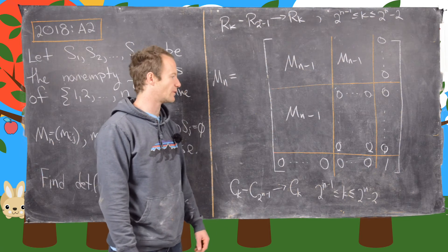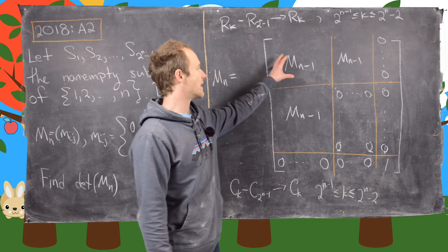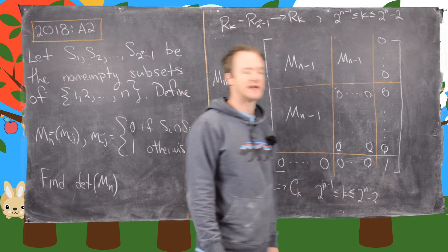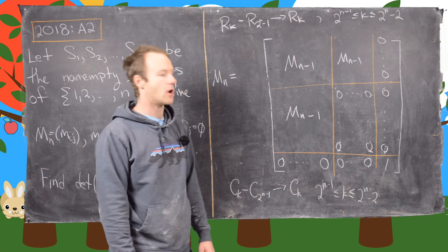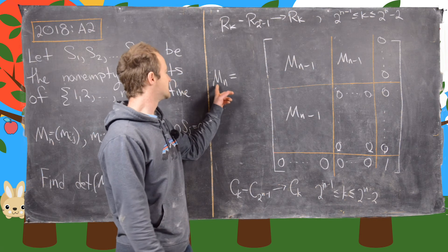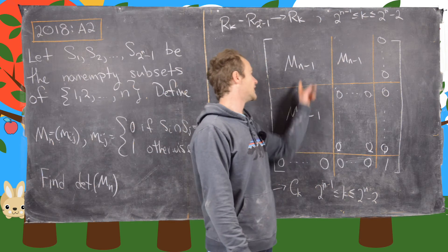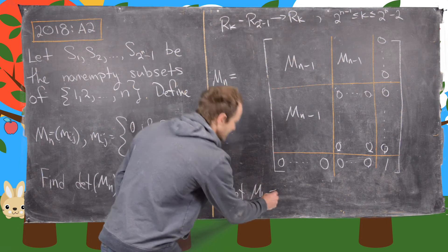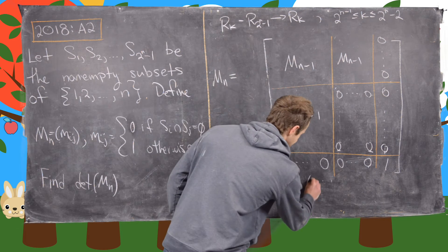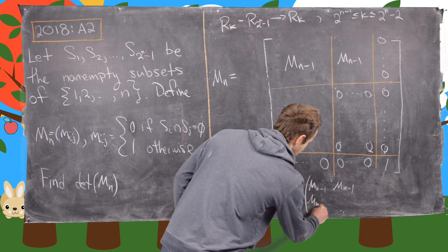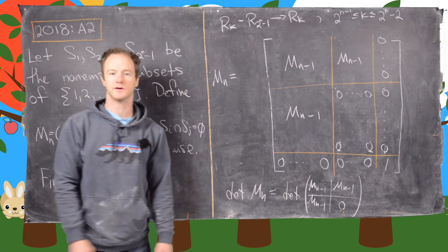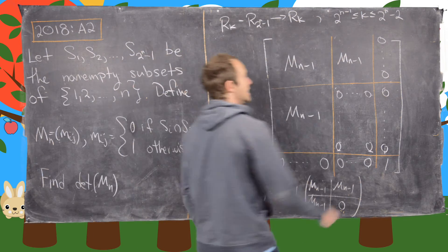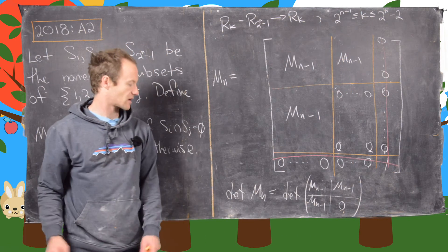After the row and column operations, we get a simpler block matrix with MN-1 blocks, a bunch of zeros, and a single 1 in the bottom-right corner. Since that 1 is on the diagonal flanked by zeros in its row and column, we can do cofactor expansion to get: det(MN) = det of the block matrix [MN-1, MN-1; MN-1, 0].